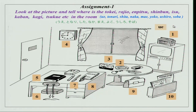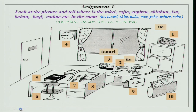Rajio wa terebi no ue ni arimasu. The second one is haizara — you have done this already in one of the previous lessons. Haizara wa teiburu no tsukue no ue ni arimasu. In a similar manner, you have this camera on the table. Tonari is the word — tonari means next. Kamera wa haizara no tonari ni arimasu. Arimasu shows the location of inanimate objects, the presence of inanimate objects at a certain point.